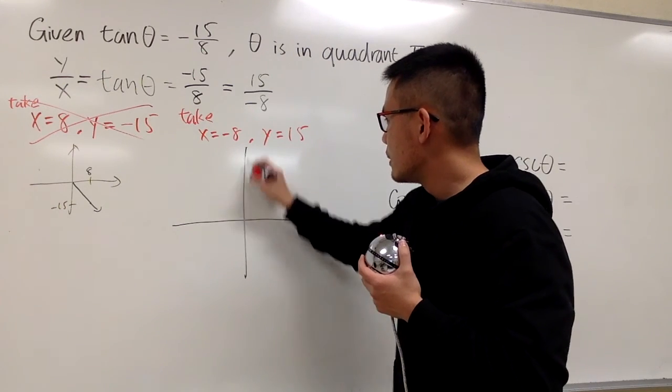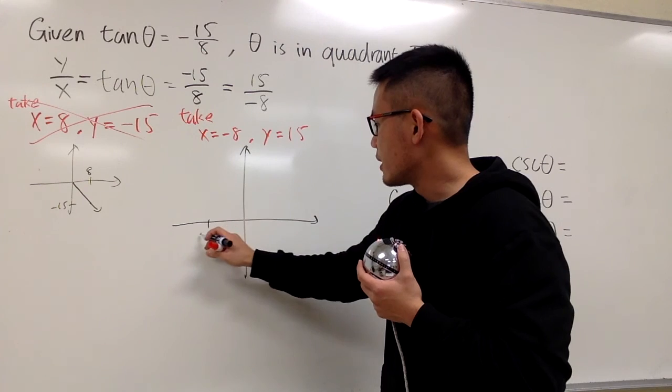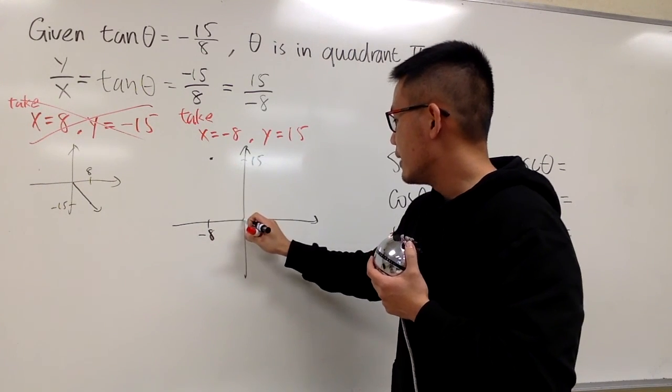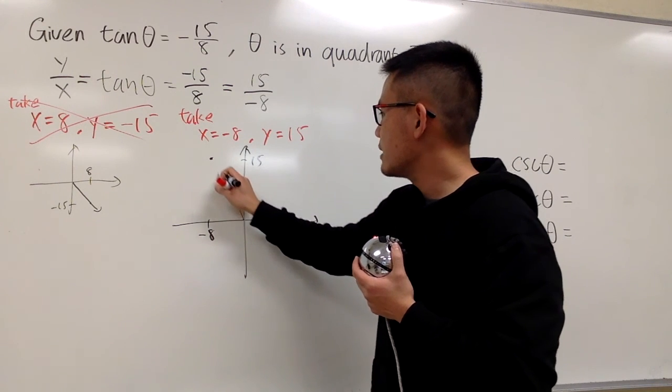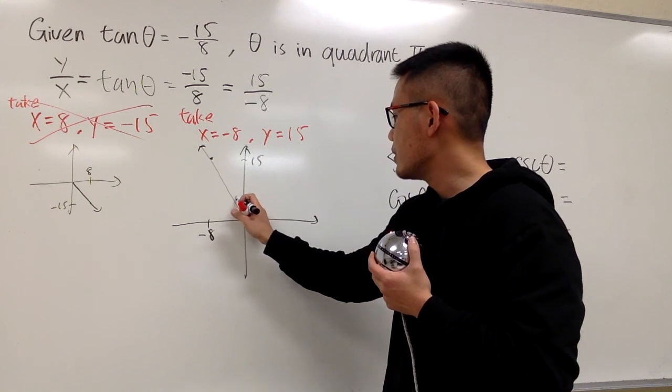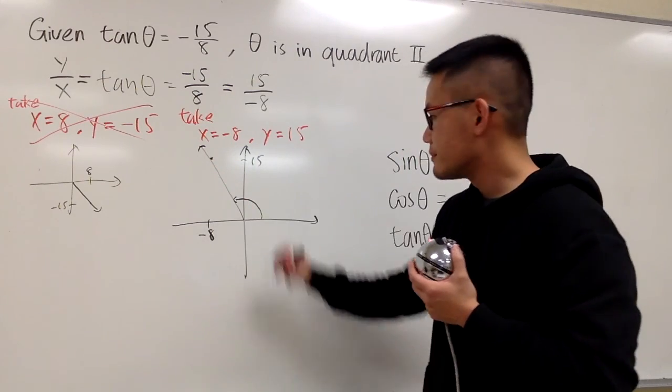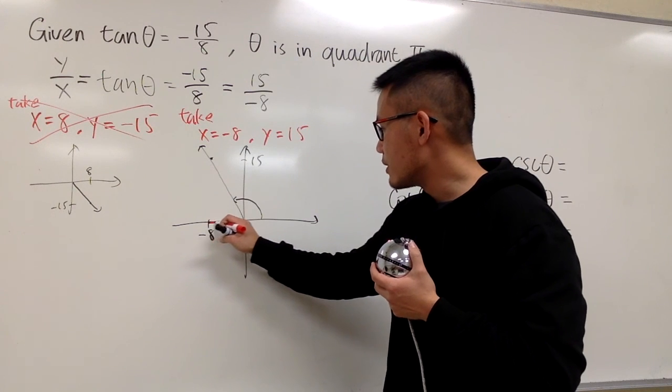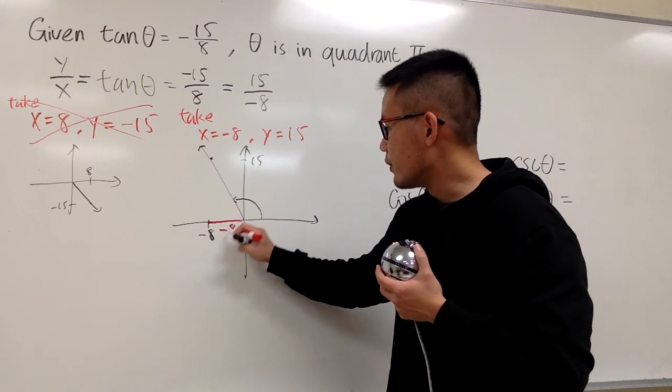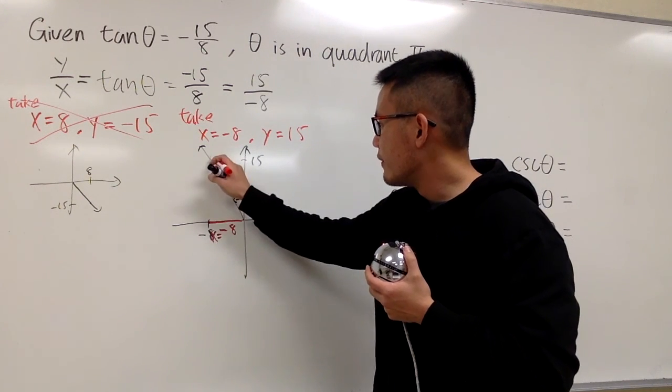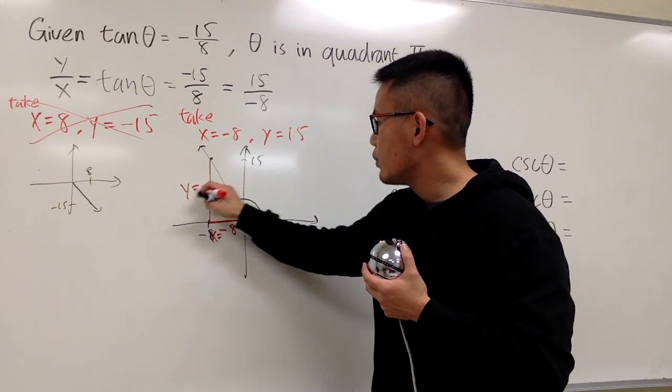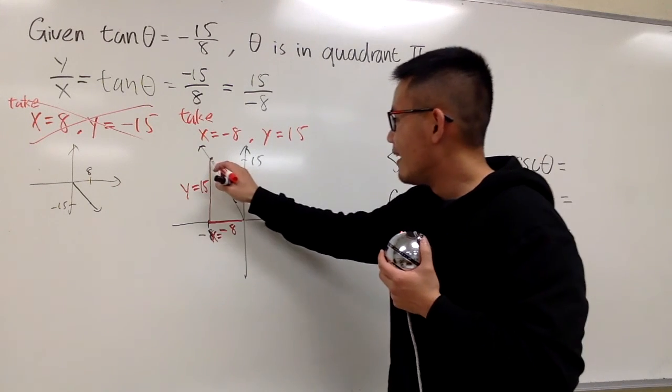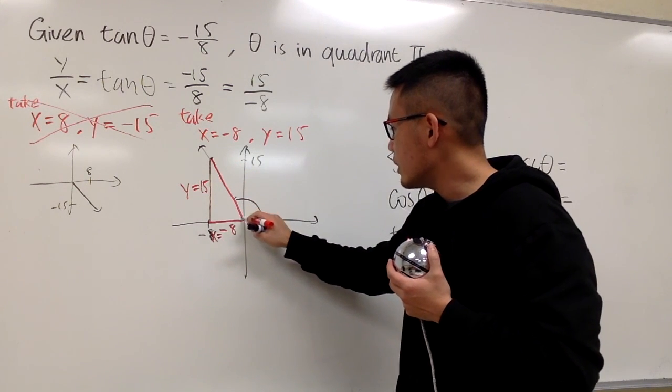So right here, x is negative 8, let me just put it down here. Positive 15, let me just write it down here, and this is the point, and we have this terminal side here. And you see the angle goes from here to here, and we line up here. Anyways, from this picture, we draw a right triangle. You see this right here is negative 8 for the x, and the vertical distance is y equals to positive 15.